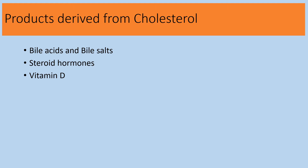Bile acids are synthesized in the liver from cholesterol and are excreted in feces through bile. Coprosterol is formed from cholesterol in the large intestine by the action of intestinal bacteria and is also excreted in feces.